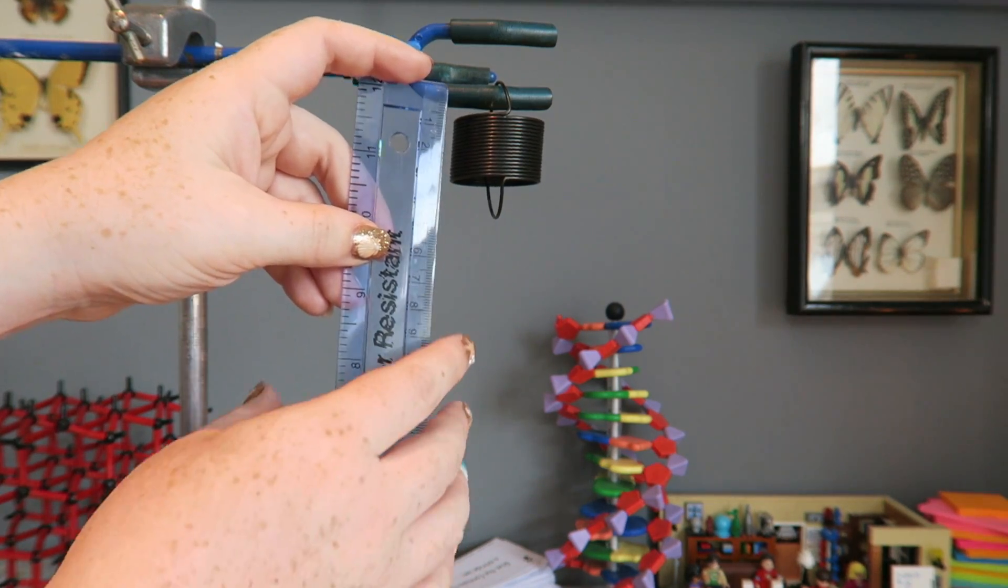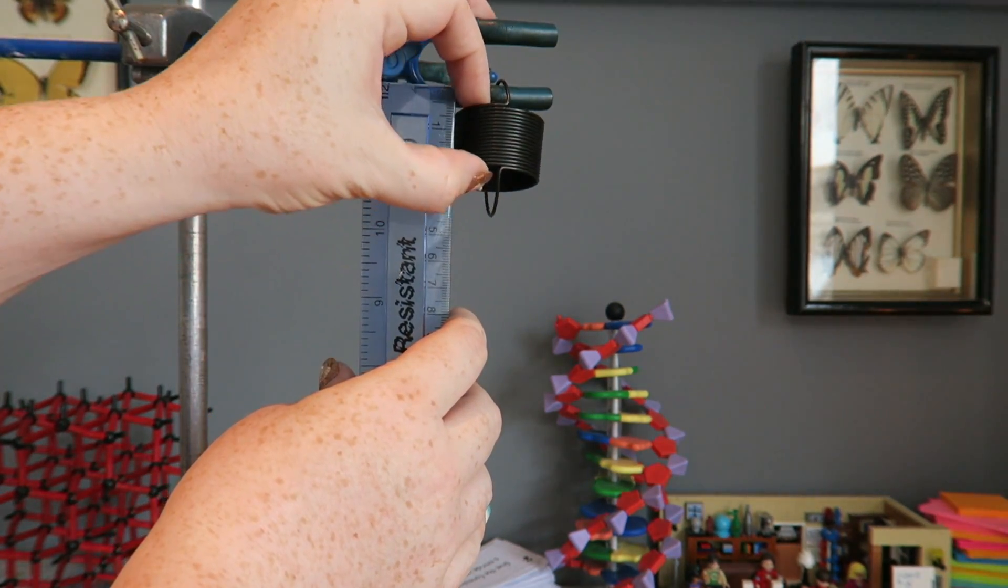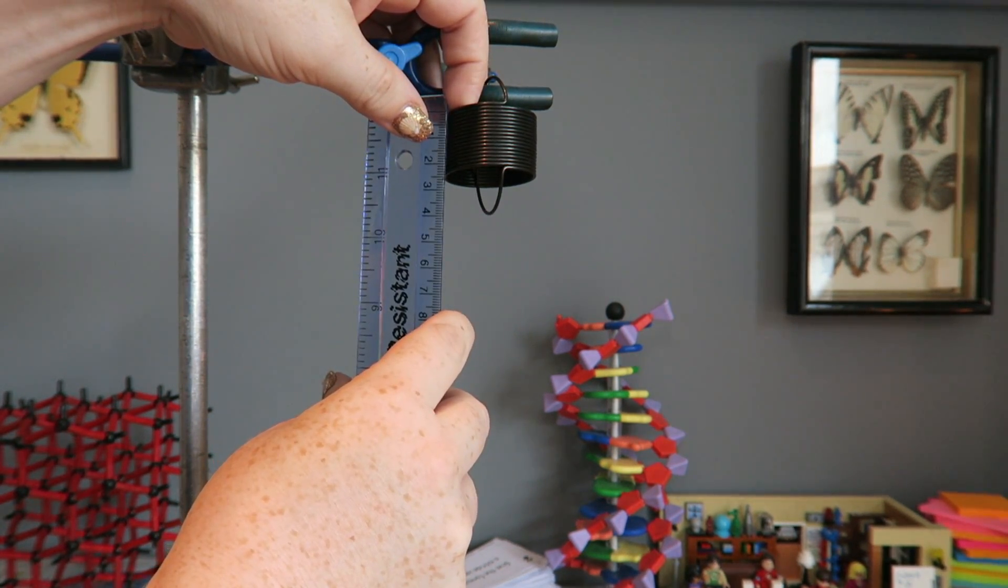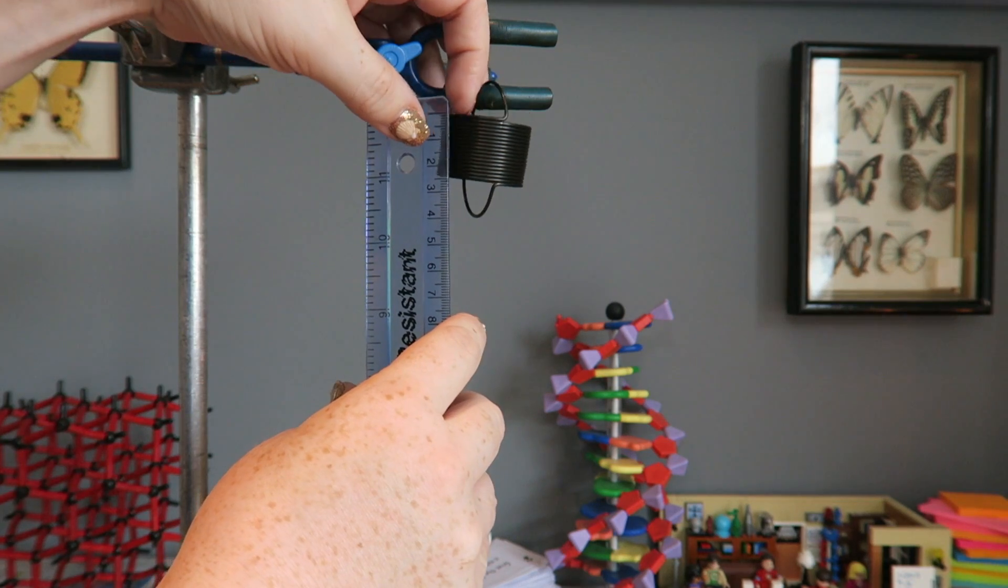Now we're going to be measuring the length of the spring, so we're going to be measuring from the top of the spring to the bottom of the spring. So here that is measuring at 2.4 centimeters.